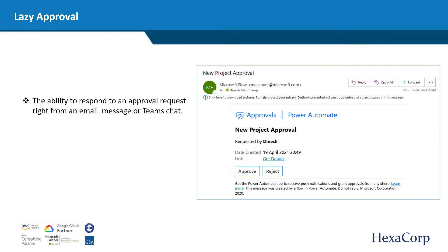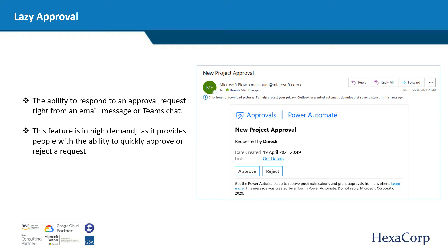Lazy approval is the ability to respond to an approval request right from an email message or Teams chat, without the need for approvers to go to the underlying application such as SharePoint. As more and more people work remotely, the lazy approval feature is in high demand as it provides users with the ability to instantaneously approve or reject a request.